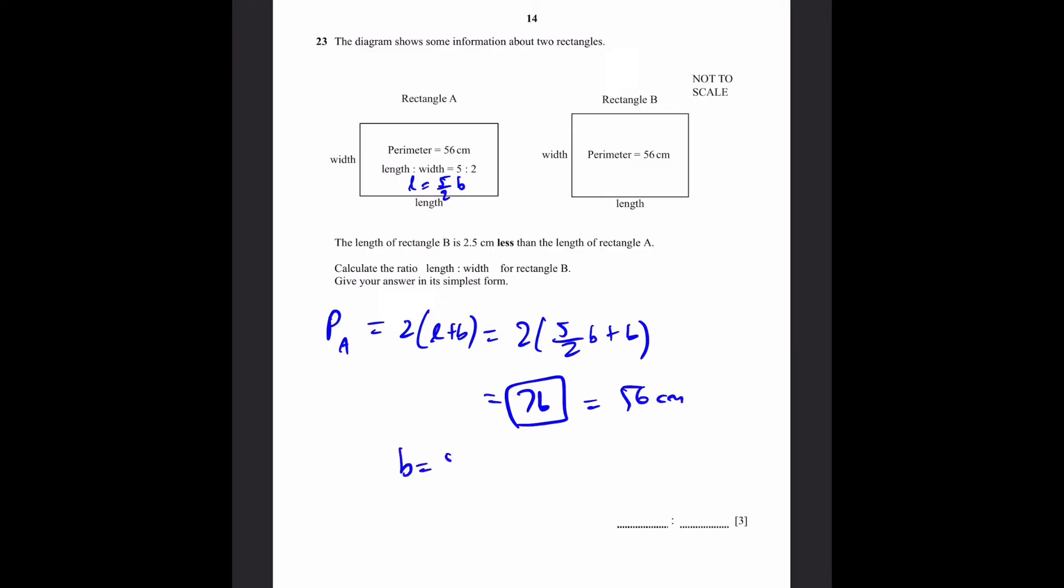So I'm just writing 5 by 2 B plus B, which is going to be 7 B at the end when you multiply by 2. And that's 56 centimeters. Now, B is equal to 56 by 7, which is 8 centimeters. And the length is going to be 5 by 2 times 8. That's 5 by 2 times the breadth, which is equal to 20 centimeters. Now, the length of rectangle B is 2.5 centimeters less. 20 minus 2.5, 17.5 centimeters.